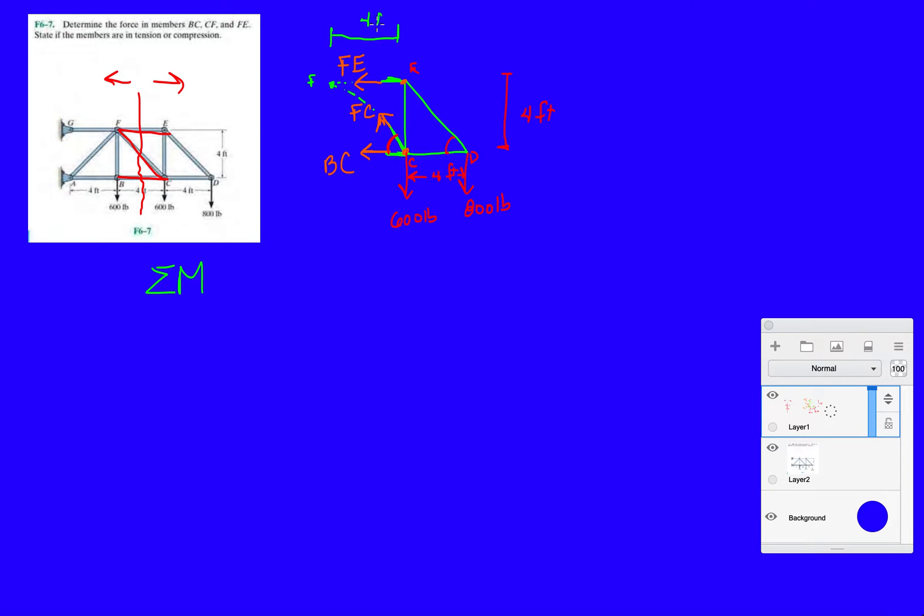If we take a moment about F and say it's in static equilibrium, FC and FE both coincide with that point, so they're not going to cause any rotation, so they don't cause any moment. The only forces that are going to contribute a moment to this is going to be BC. So we know it's going to be BC times a distance of four.